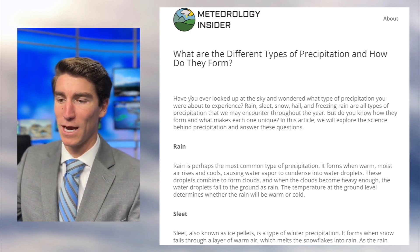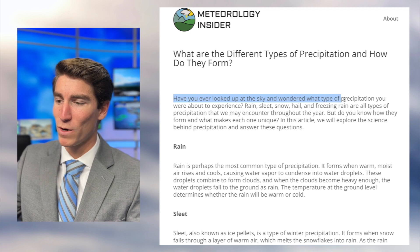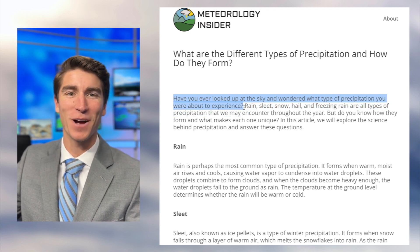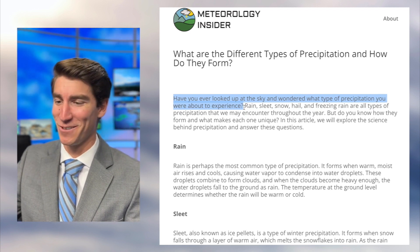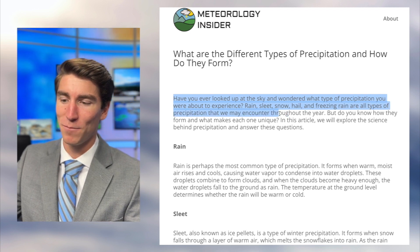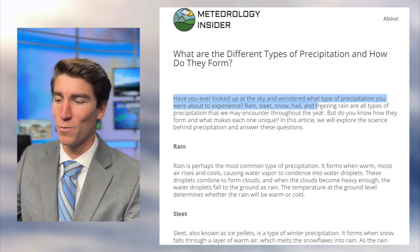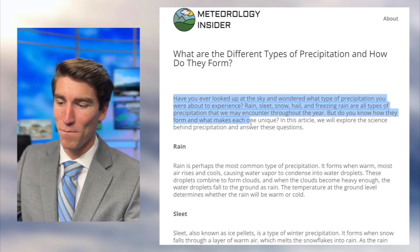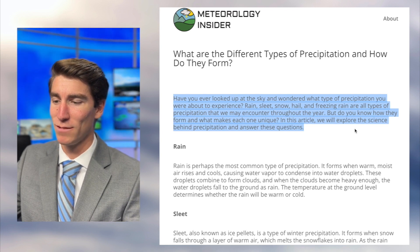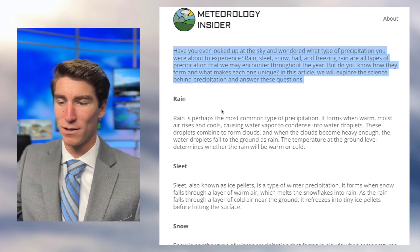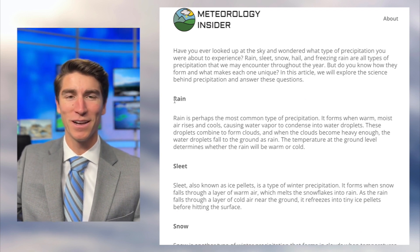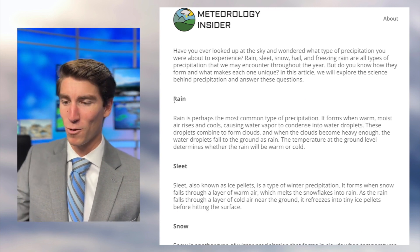Have you ever looked up at the sky and wondered what type of precipitation you were about to experience, or got a phone call and forgot something you learned about five to six years ago? Rain, sleet, snow, hail, and freezing rain are all types of precipitation we may encounter throughout the year. Do you know how they form and what makes each one unique? In this article we'll explore the science behind precipitation and answer these questions. Let's start with an easy one — rain.